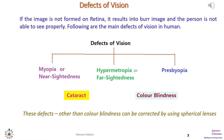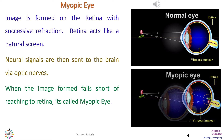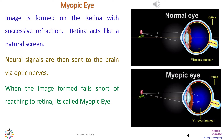These defects, other than colorblindness, can be corrected by using spherical lenses. The image is formed on the retina with successive refraction. The retina acts like a natural screen, and neural signals from here are sent to the brain.